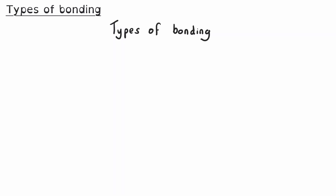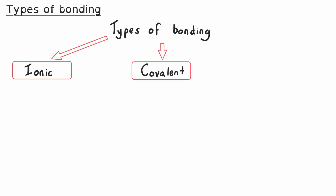There are three different types of strong chemical bonds: ionic, covalent, and metallic.